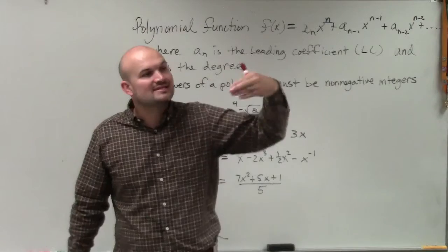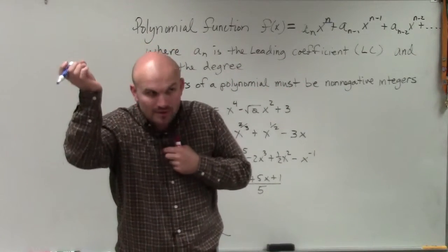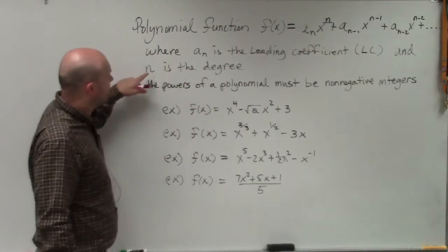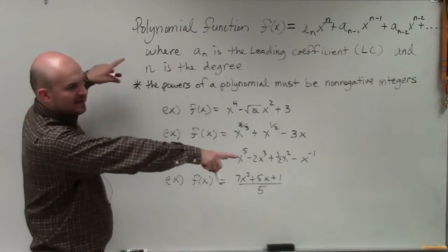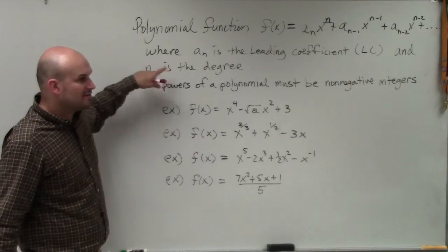So what I want you to understand is this is our formal way of writing a polynomial with the largest power first. So that n is also what we call our degree, which we kind of talked about, which end behavior, wherever that was. We talked about end behavior as your degree.